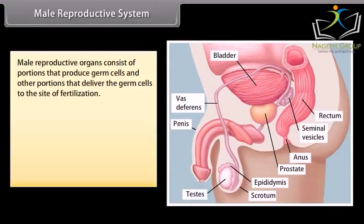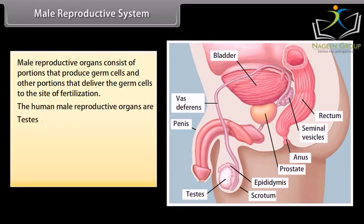The male reproductive system consists of portions that produce germ cells and other portions that deliver the germ cells to the site of fertilization. The human male reproductive organs are: testes, epididymis, vas deferens, urethra, and penis.